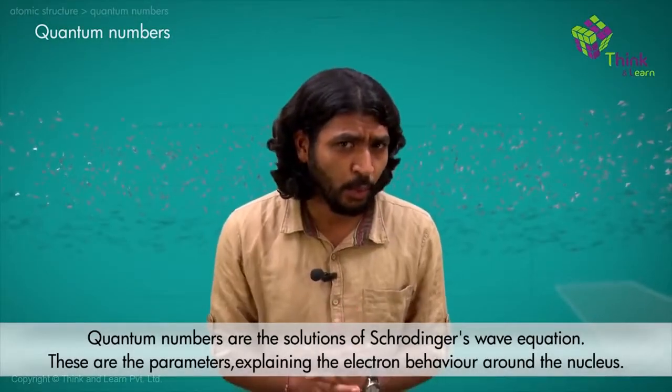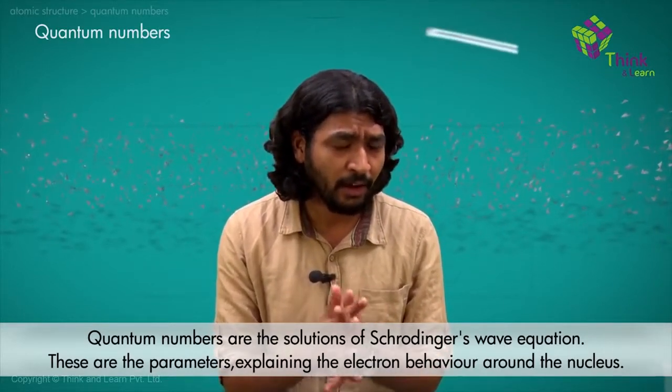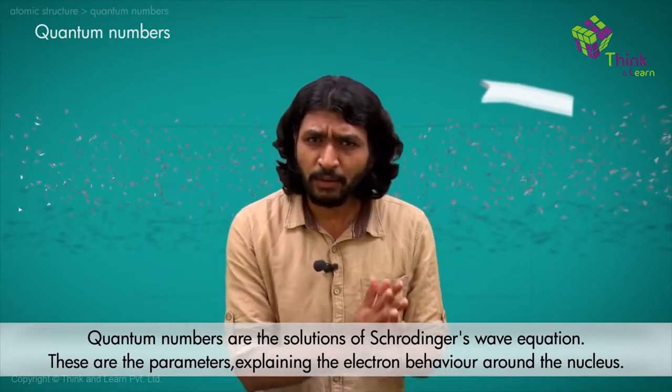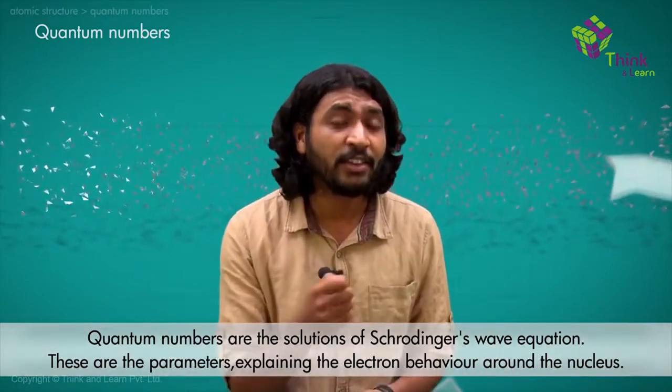Now let's look at how we write electronic configuration — how we write addresses and find the exact location of electrons using orbitals. That's when we need to use something called quantum numbers. Quantum numbers came out as a solution for Schrödinger's wave equation and are parameters explaining electron behavior around the nucleus. In simpler terms, quantum numbers give us the address of an electron around the nucleus.